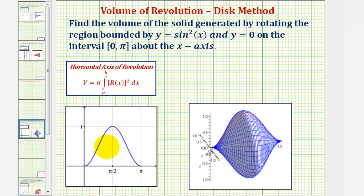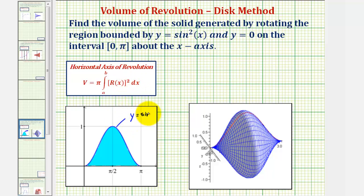Looking at the graph here on the left, this is the bounded region. The blue graph is our function y equals sine squared x. We're rotating this region about the x-axis and our goal is to find the volume of this solid here.